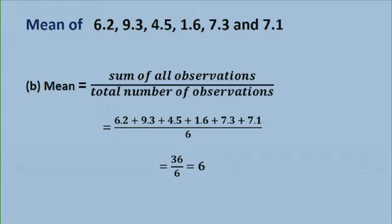Part B, to find the mean of these numbers. So I add all of them. Here we have 1, 2, 3, 4, 5, and 6 observations. So I divide by 6. So the sum here is 36. 36 over 6, which is 6. So I have a mean of 6.